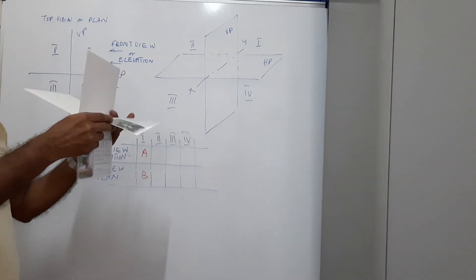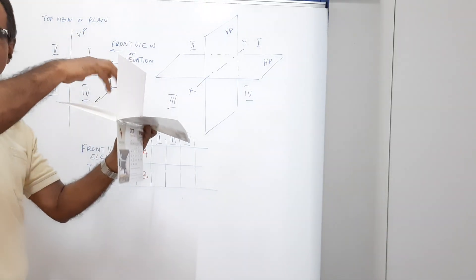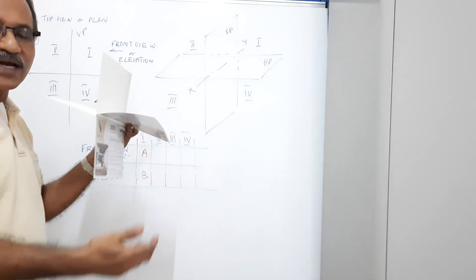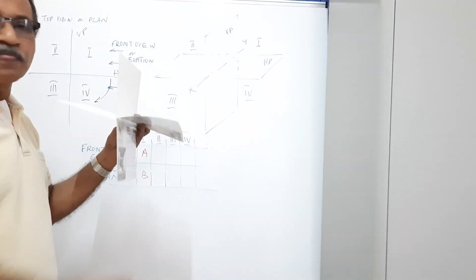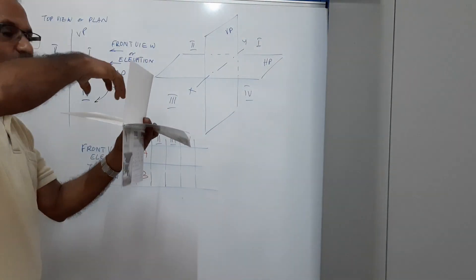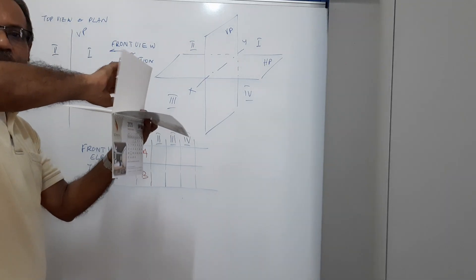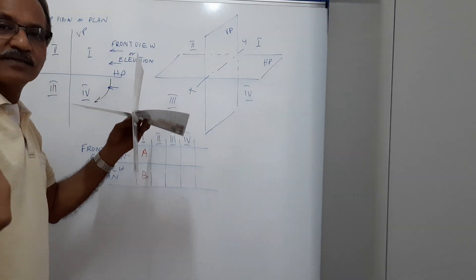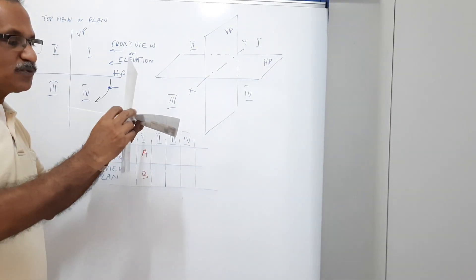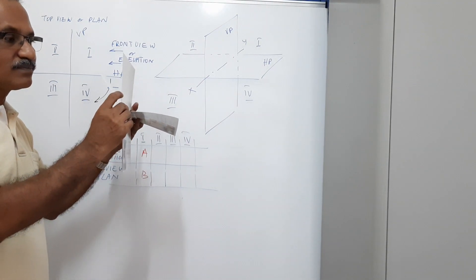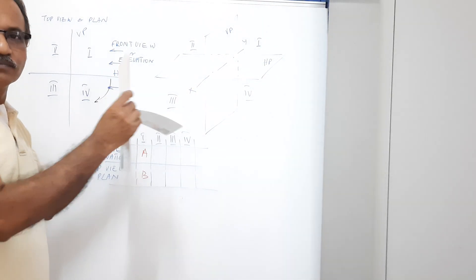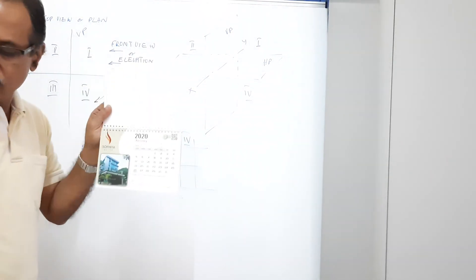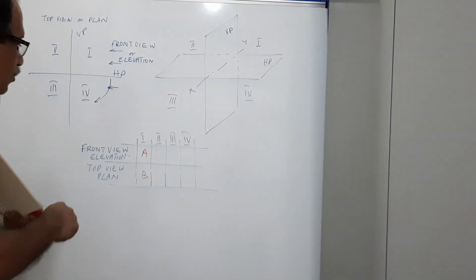Next case: the object is situated in the second quadrant. The light rays are parallel and the planes are transparent. Looking through the transparent plane you see the object and make an impression on the VP. You look from the top to get the plan on the HP. Go back and rotate the HP through 90 degrees clockwise. Result: both the elevation and the plan are above the XY line.